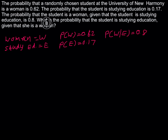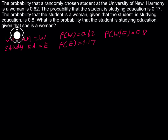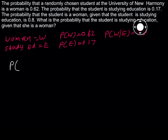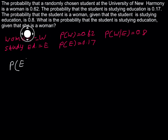They are asking: what is the probability that the student is studying education given that she is a woman? Given that she is a woman is W. So we need to find the probability of E given W — that is P(E | W).